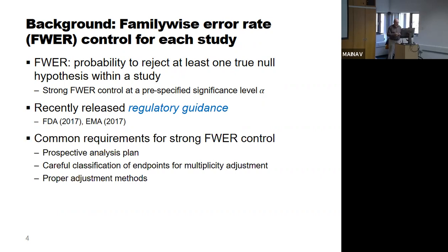It is documented in two guidelines mentioned here — from the FDA in the US and the European Medicines Agency in Europe, both from 2017 — which are very consistent in their requirements. For strong family-wise error rate control, you need a prospective analysis plan: specify your test strategy in the study protocol, with a careful classification of endpoints, specifying which hypotheses are primary and which are secondary, and applying proper statistical adjustment methods.